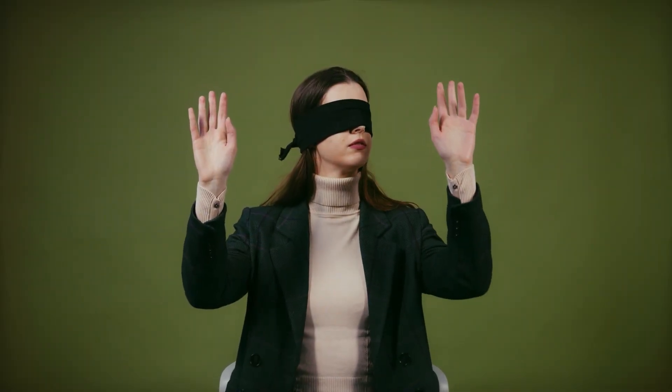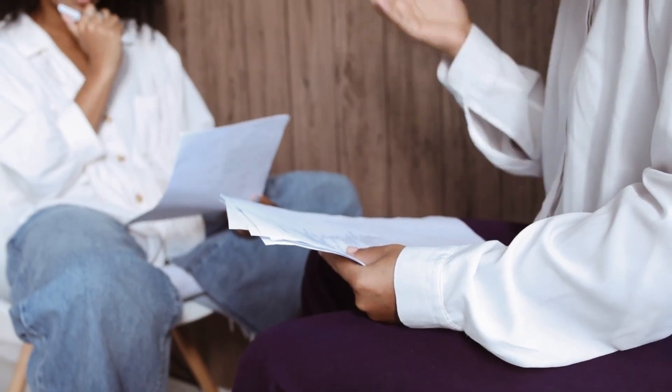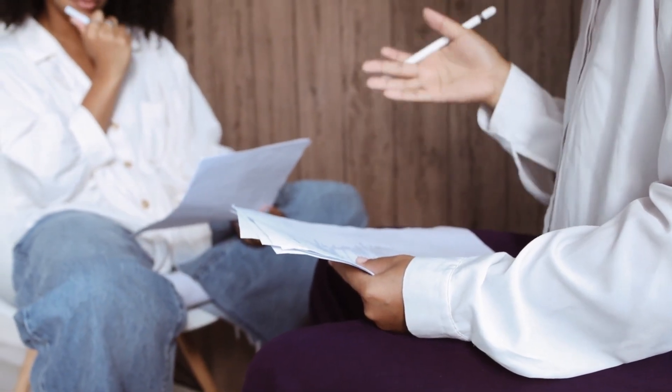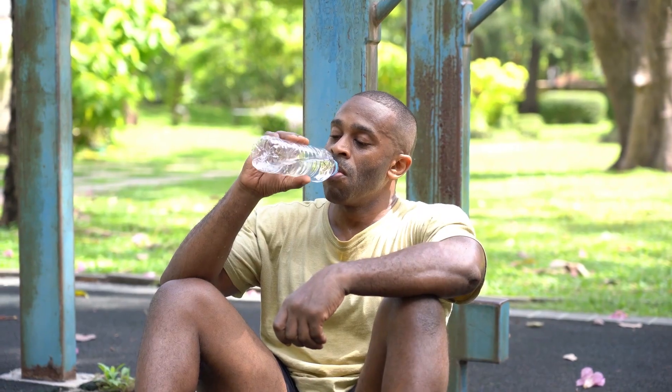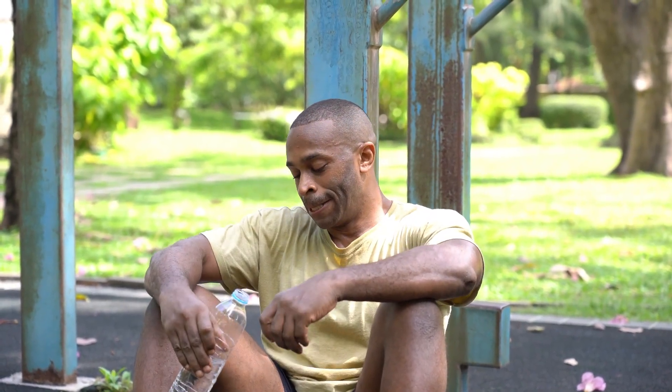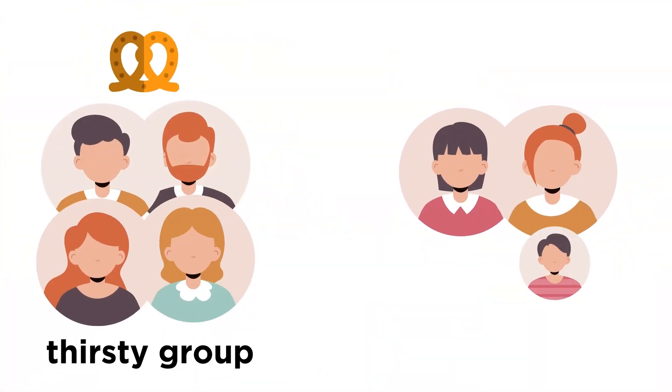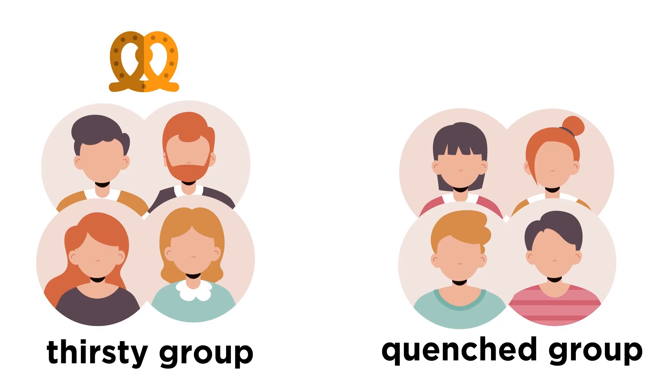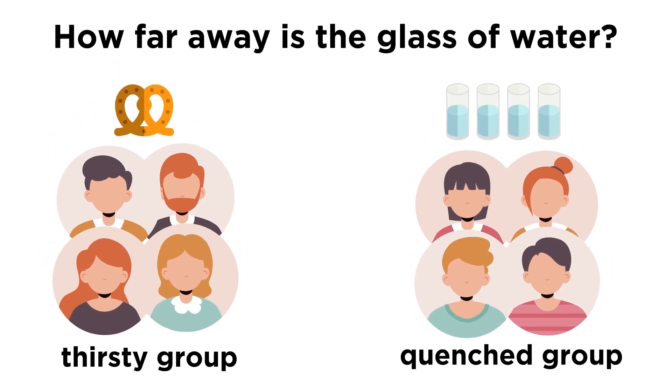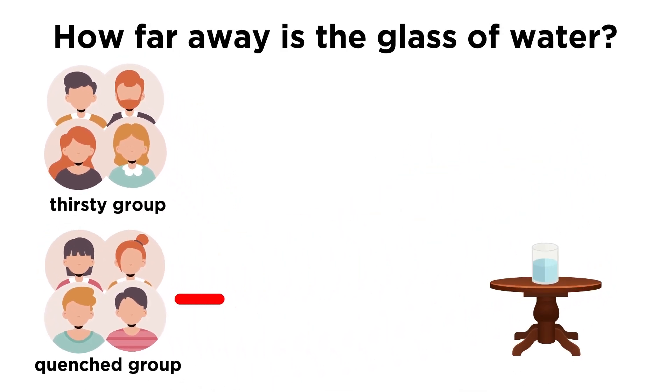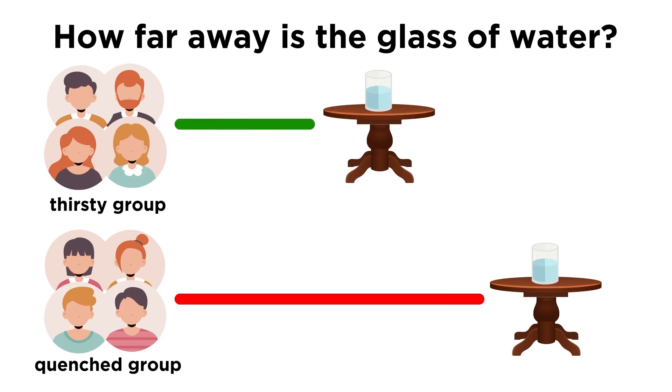Your daily life experience can also impact your perception. A study done in 2010 by Balchettis and Dunning looked at how desire impacts perception by manipulating how thirsty participants were. Participants were in either the thirsty group, where they ate a bowl of pretzels, or in the quenched group, where they drank up to four glasses of water. Each participant was then asked how far away a glass of water was. The quenched group thought the water was significantly farther away than the thirsty group did. The desire of wanting water changed the perception of distance.